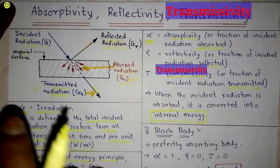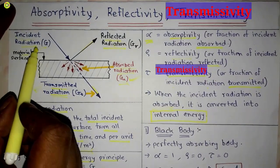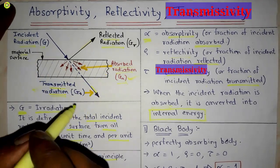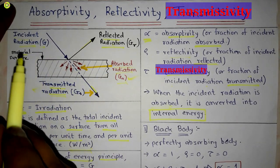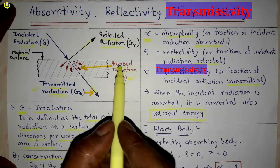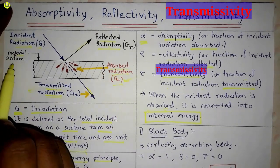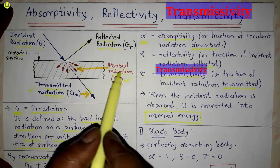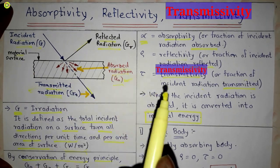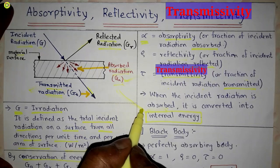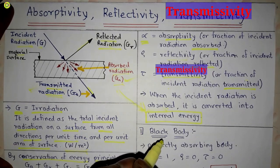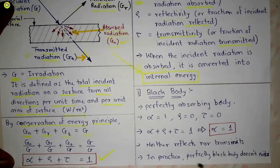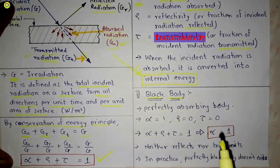When the incident radiation is absorbed by the material surface, it is converted into internal energy. The incident radiation falls on the material surface, some of it is absorbed, and that absorbed radiation gets converted into internal energy.